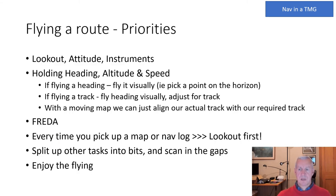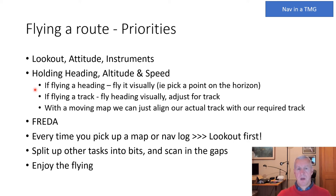When flying along, priorities are: first, the normal scan — Lookout, Attitude, Instruments — with emphasis on lookout. Hold the heading, attitude and speed visually by picking a point on the horizon. Every scan include speed, a look over the nose to check you're still pointed at the reference, and occasionally a check of the compass. Only correct a heading error if it persists over a few scans; don't chase it every time.